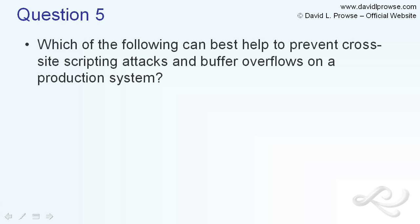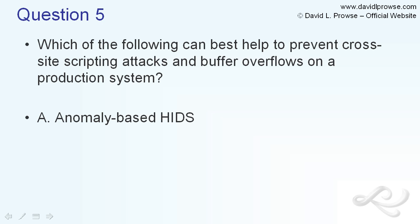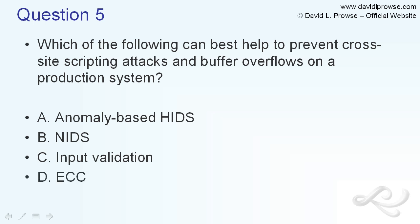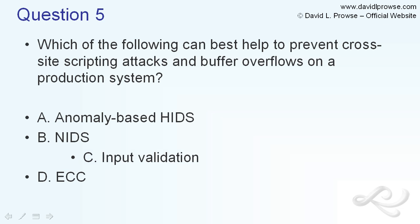Question five: Which of the following can best help to prevent cross-site scripting attacks and buffer overflows on a production system? The answers are: A, anomaly-based HIDS; B, NIDS; C, input validation — which is jumping out right away; and D, ECC, which seems like a pretty silly answer. The best answer here is input validation.